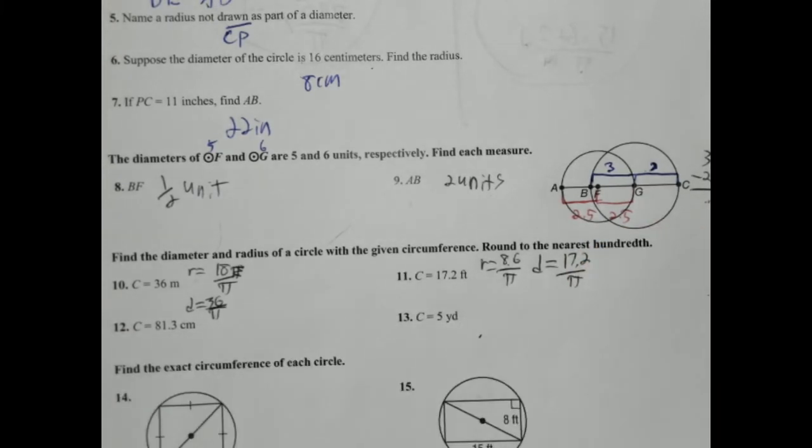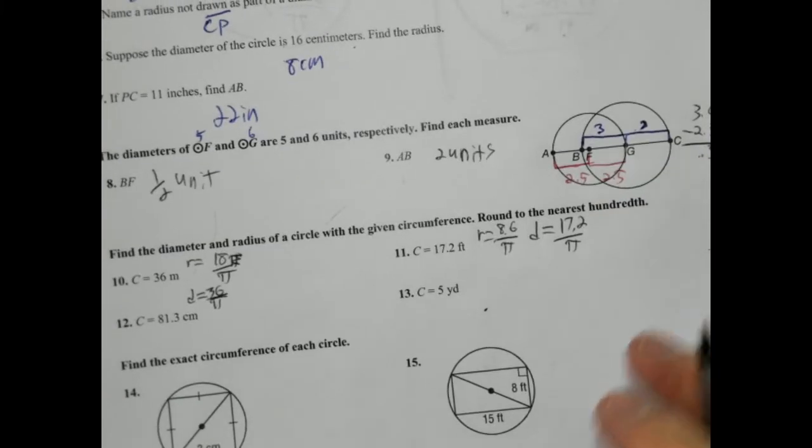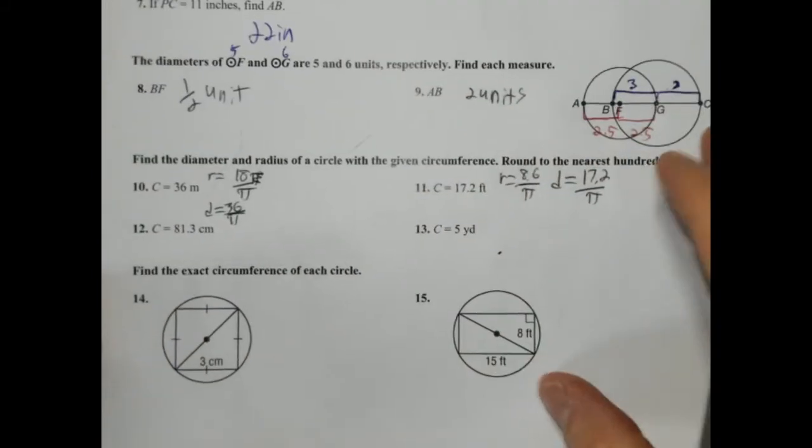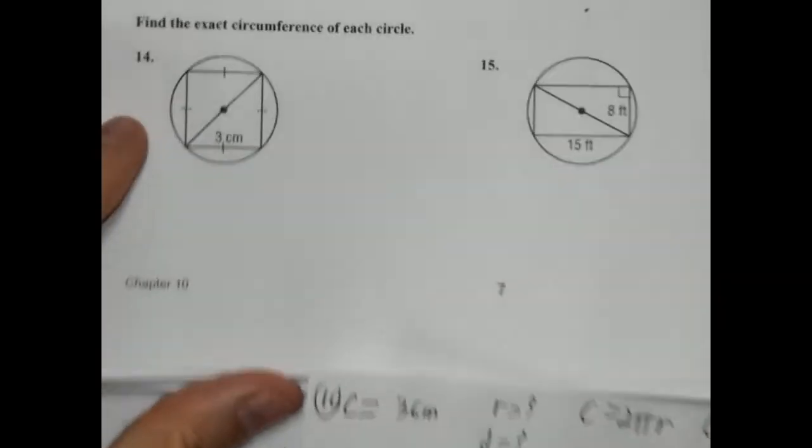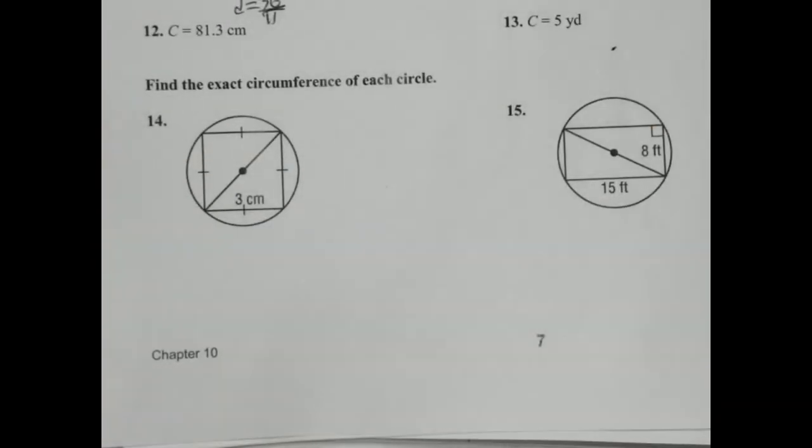Okay. We're not going to do 12 and 13 because honestly those problems are kind of boring. I'm not going to lie to you. If you want to do them, that's fine. Two of those is plenty, honestly. All right. 14 and 15. Oh, I like these. These are cool. All right. So find the exact circumference of each circle.